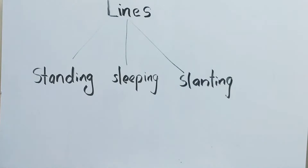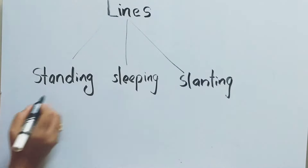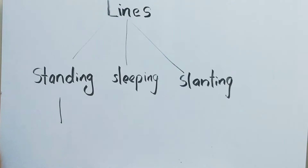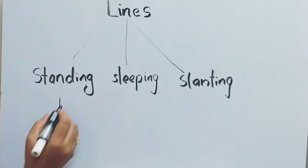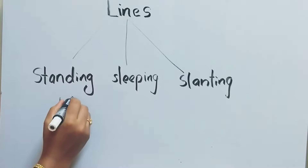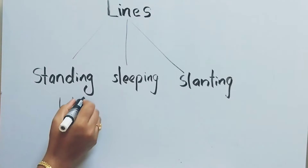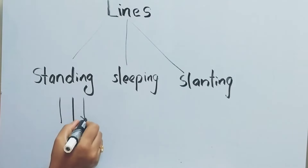First, standing lines. Draw a straight line from up to down. It is also called a vertical line — up to down.